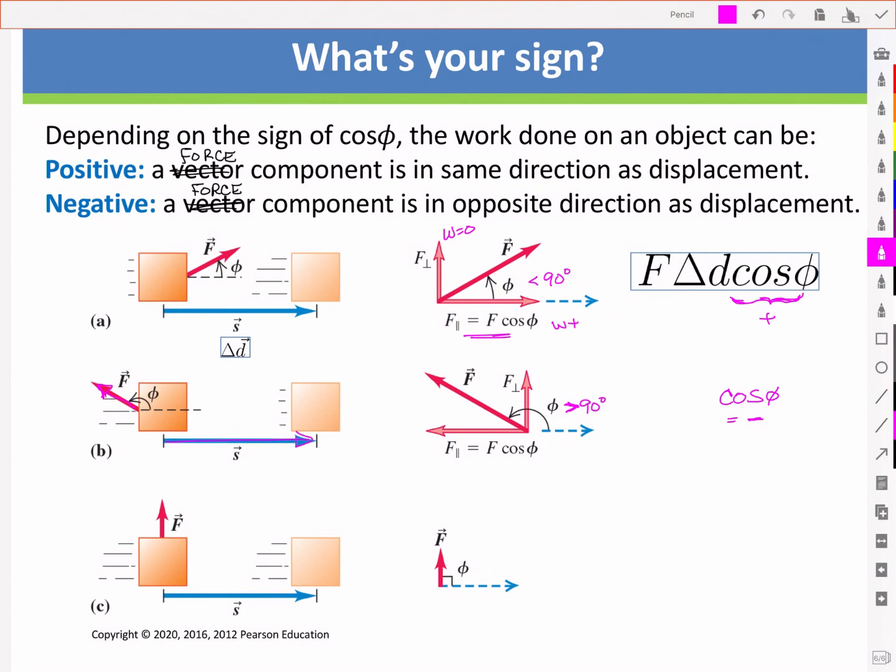Lastly, a force does zero work when the force and the displacement are perpendicular. That came from our definition or our three criteria of work. And so when phi is equal to 90 degrees, the cos phi will be equal to zero. And hence, we have zero work.